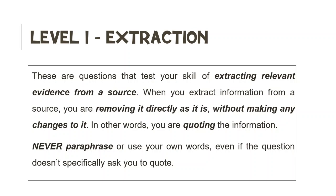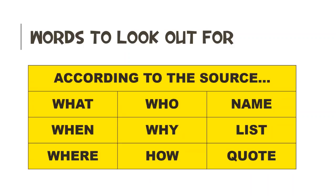Level 1 questions test your skill of extracting relevant evidence from a source. When you extract information from a source, you are removing it directly as it is without making any changes to it — in other words, you are basically quoting the information. Remember that you must never paraphrase or use your own words, even if the question doesn't specifically ask you to quote. How do we know a question is a Level 1 extraction question? We look for the following words: according to the source, what, when, where, who, why, how, name, list, and quote. When we see these words, we know it is a Level 1 question, and we simply find the answer in the source and quote it without changing any of the words.